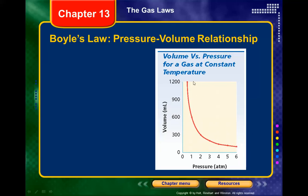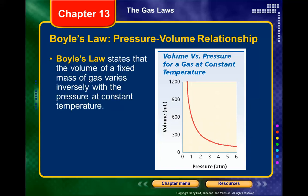We're going to do a lab where you can actually get this graph and duplicate Boyle's experiment. Boyle's law states that the volume of a fixed mass of gas — so we're not adding or removing any gas — varies inversely with the pressure at constant temperature.